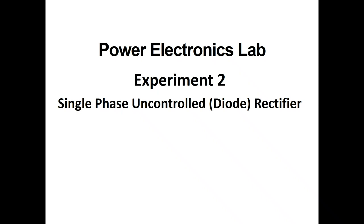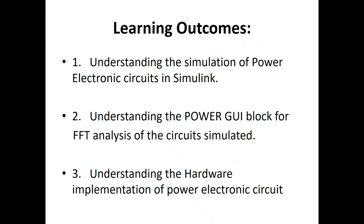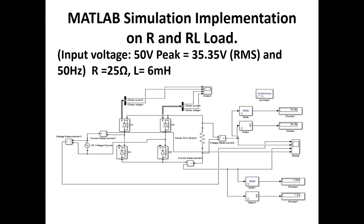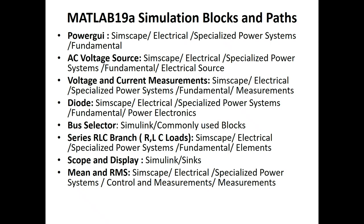Power Electronics Lab, experiment number 2: single-phase uncontrolled diode rectifier. Learning outcomes include understanding simulation of power electronic circuits in Simulink, understanding the PowerGUI block for FFT analysis, and hardware implementation. Circuit parameters: input voltage 50 Hz peak equal to 35.35 V RMS, R value 25 ohms, and for RL load L value 6 mH.